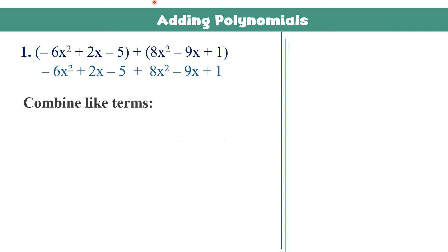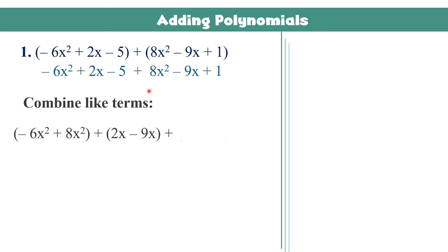When we say like terms, those are the terms with the same variable. For example, negative 6x squared can be combined with positive 8x squared since they both have the variable x squared. We also have 2x, which can be combined with negative 9x because both have the variable x. Then we still have the constant term negative 5, which can be combined with positive 1.